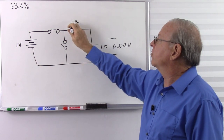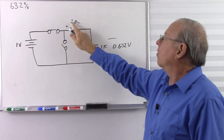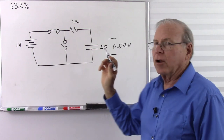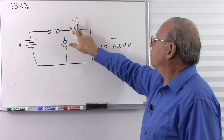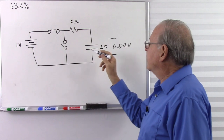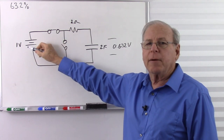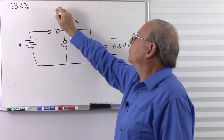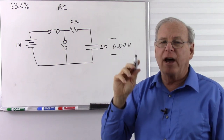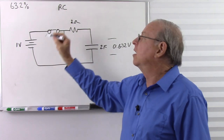We also saw that if we increase the resistance — say we double the resistance — we doubled the time it took to get to that voltage. Or if we doubled the capacitance, it also took twice as much time to reach that voltage. Or if we doubled both, it took 4 times as long. So the time it takes for the capacitor to charge to 63.2% of the applied voltage is determined by the resistance multiplied by the capacitance.